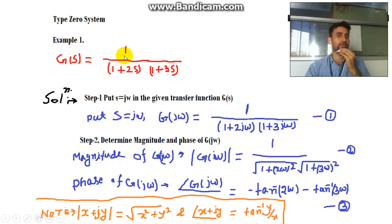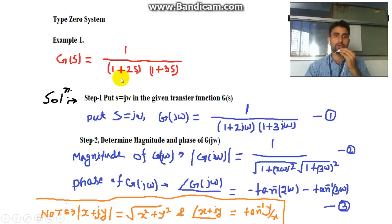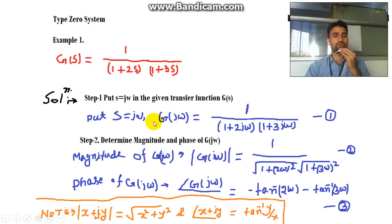Step 1: We'll put s = jω because we need to find the frequency response. So replace s with jω in the given transfer function. With s = jω, we get G(jω) = 1 / [(1 + 2jω)(1 + 3jω)].